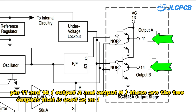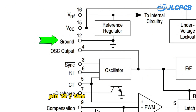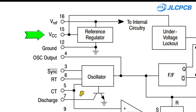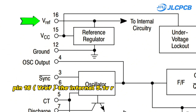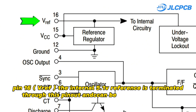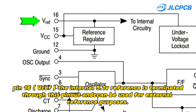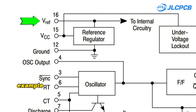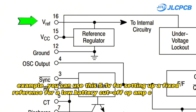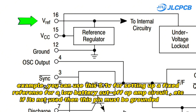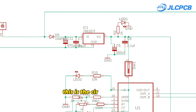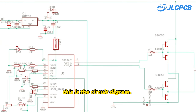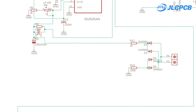Pins 11 and 14 are two outputs used as inputs for an external device. Pin 12 is the ground pin. Pin 15 is the supply input voltage, 8 to 35 volts. An internal 5.1 volt reference is provided through pin 16 and can be used for external reference purposes — for example, setting a fixed reference for a low battery cutoff or overcurrent circuit. If pin 16 is not used, it must be grounded with a low-value capacitor. The circuit diagram and PCB files download link are in the video description below.